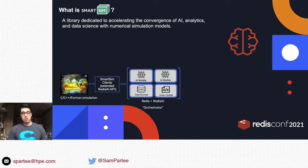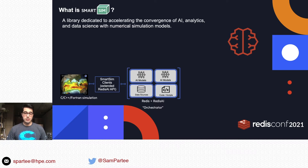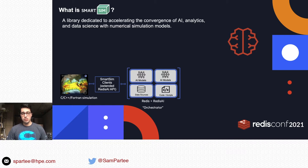Traditionally, incorporating Python-based data science libraries in these simulations is difficult. Simulations are usually written in statically typed compiled languages focused on speed, like C++ and Fortran. These jobs usually run as large batch jobs and can take hours, days, or even weeks to complete before the data they generate can be accessed or analyzed. The data science ecosystem, on the other hand, is focused on iteration, speed of development, and prototyping, primarily using dynamically typed languages like Python.